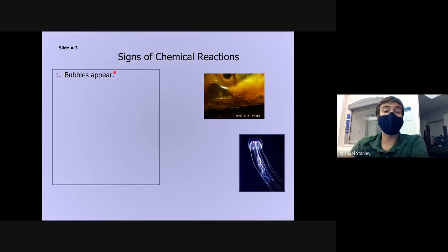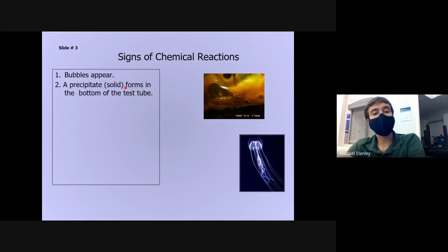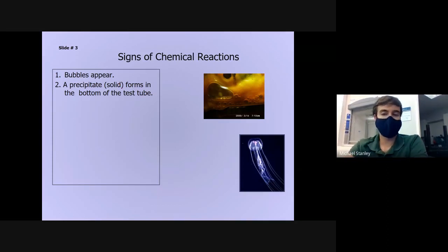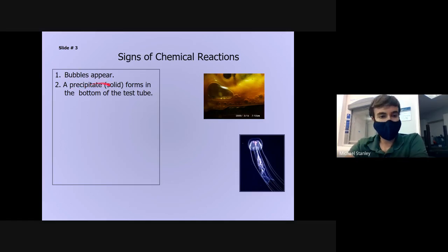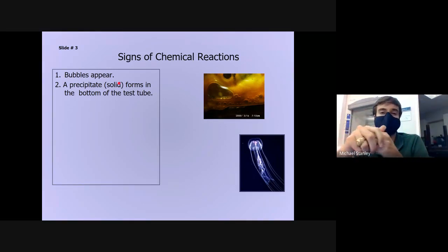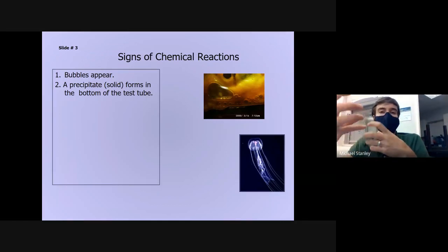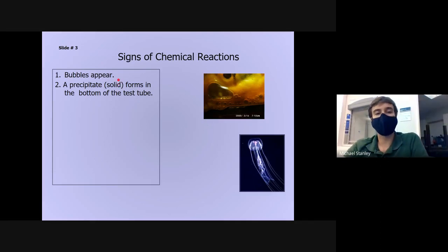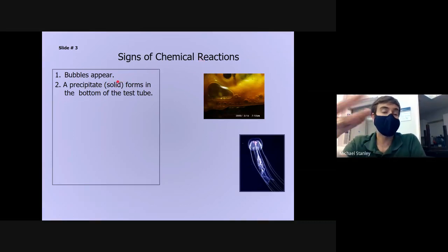You could also have the opposite occur. Instead of a new gas appearing as bubbles, you could end up with a new solid appearing. Because it's science, we have to give things fancy names: a new solid formed from a chemical reaction is called a precipitate. This would be like if you mix two different liquid chemicals together and all of a sudden a powder or mineral starts to form on the bottom of your test tube or beaker. That would be a sign that a chemical reaction has happened — you created this new solid that was not there before.